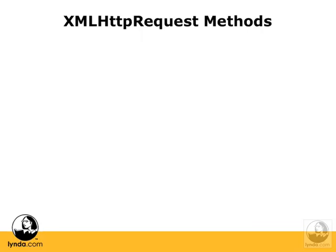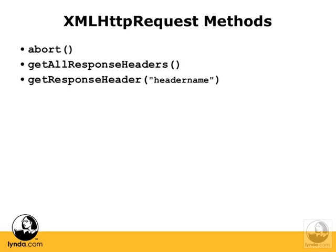As with any good JavaScript object, XMLHttpRequest has methods. Again, we'll be looking at these in much more depth over the next few lessons. There's Abort, which aborts the request. GetAllResponseHeaders, which asks the server for the response headers. GetResponseHeader, in which you pass a certain particular header name and get a response.